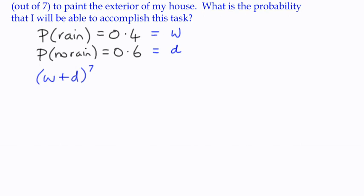So W plus D, we know has to have the value of 1. The reason why we're raising it to the 7th power is that there's 7 consecutive events each day. There's a probability of something happening.